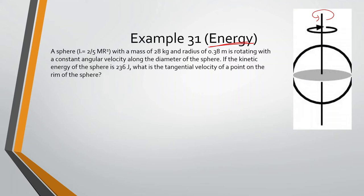A sphere with a moment of inertia of 2/5 mR², a mass of 28 kilograms, and a radius of 0.38 meters is rotating with a constant angular velocity along the diameter of the sphere. If the kinetic energy of the sphere is 236 joules, what is the tangential velocity of a point on the rim?